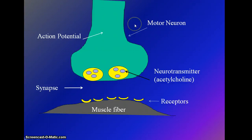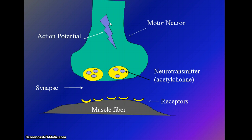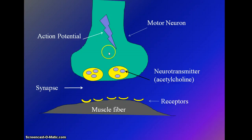An electrical signal called an action potential will travel down the motor neuron.